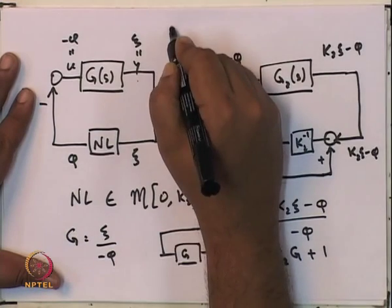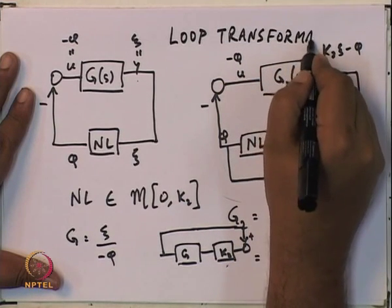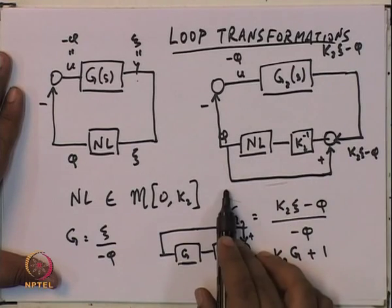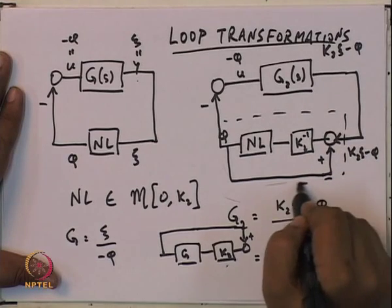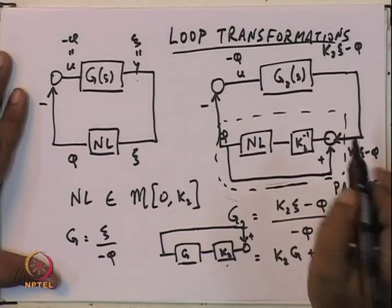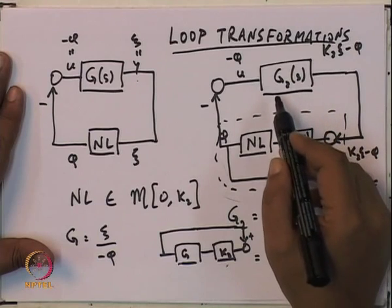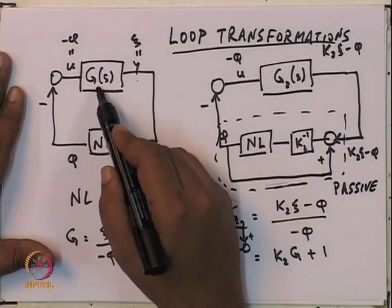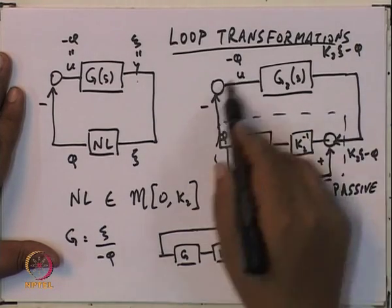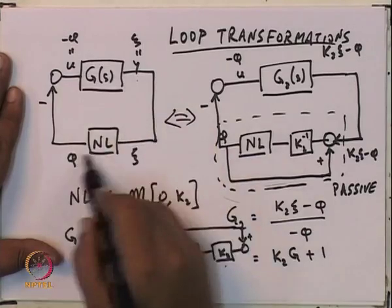These transformations go under the name of loop transformations. By doing this loop transformation we get a new passive nonlinearity. Therefore, if this modified linear plant G' is strictly positive real and stable, the original plant connected in feedback with the nonlinearity in the 0-k2 sector will be asymptotically stable.